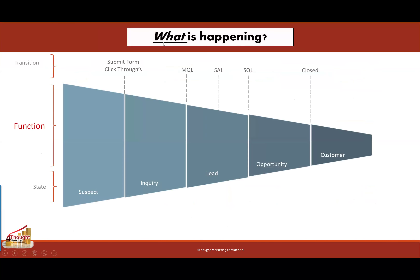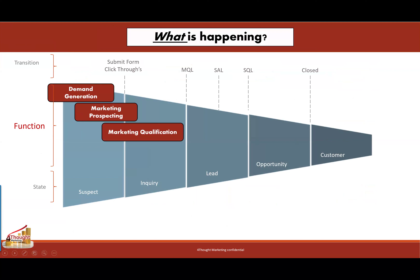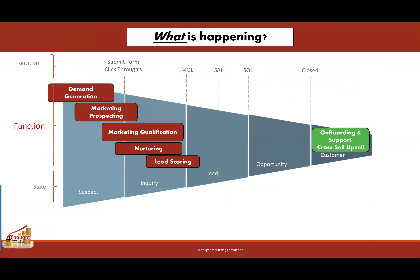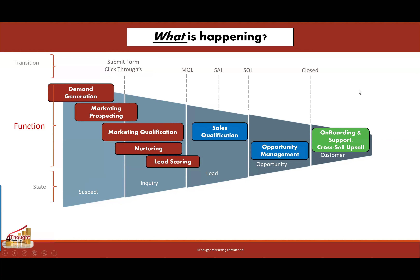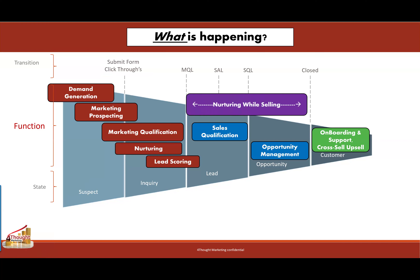Let's talk about what is happening from a functional perspective as we go through the funnel when nurturing while selling. We're all familiar with the basic functions of marketing automation at the beginning of the process, and with what happens after the sales process — onboarding, cross-sell, and upsell processes. But for many organizations, nurturing while selling — the middle portions of the funnel — is a relatively untapped opportunity, and there are some good political reasons for that, but those can be overcome.